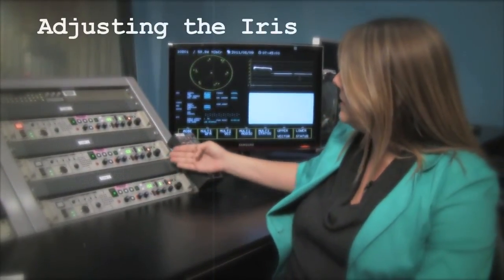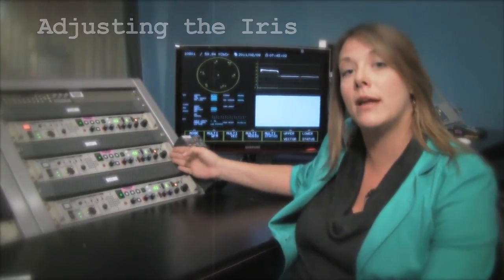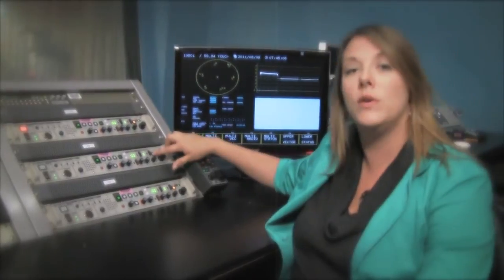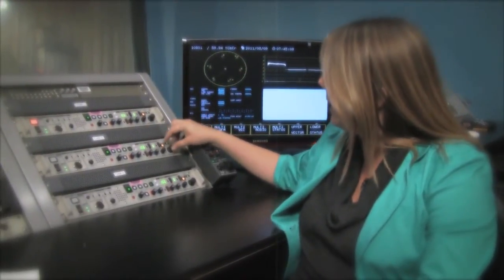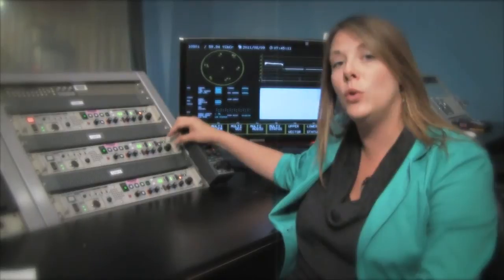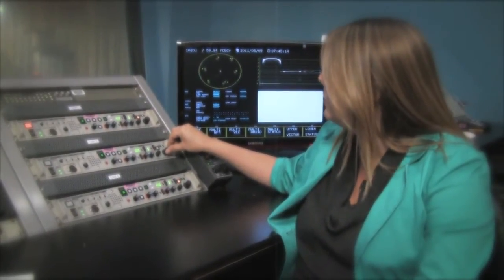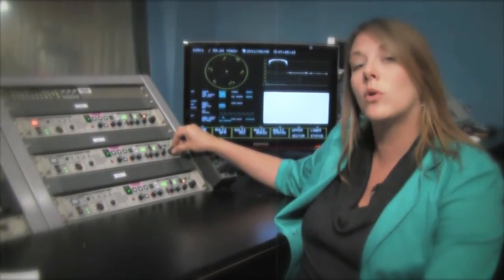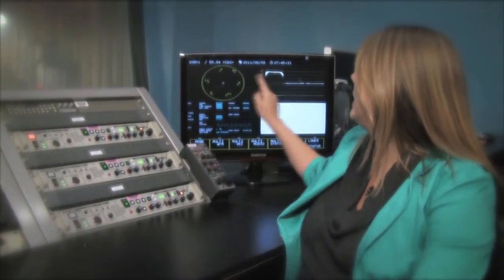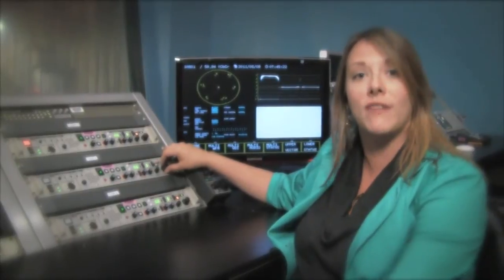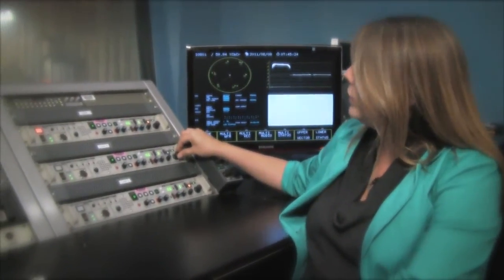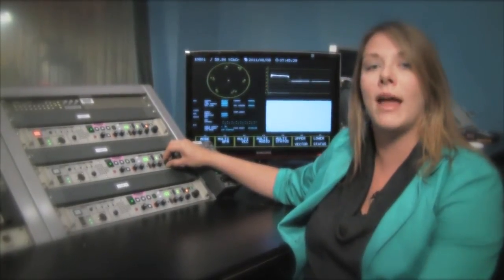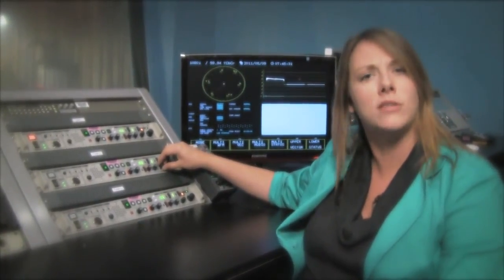A couple things that I wanted to explain about the iris here is that you can toggle between automatic and manual using this button. The next thing that you can do is in a manual iris, you can increase or decrease the brightness and you can see that you're getting more or less light and you're raising the luminance on your vectorscope. You can also adjust your black balance which adjusts for contrast and will allow you to have a very sharp image or a very soft image.